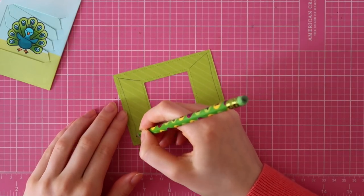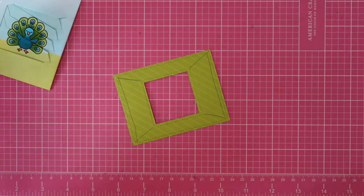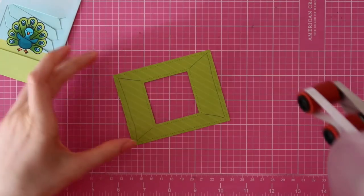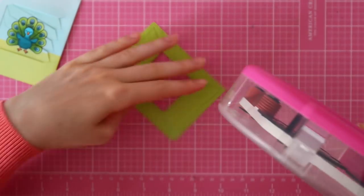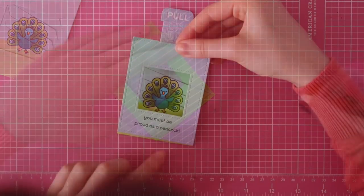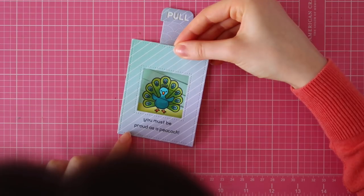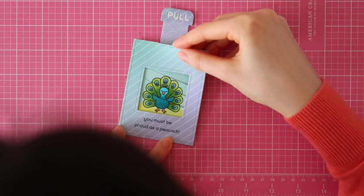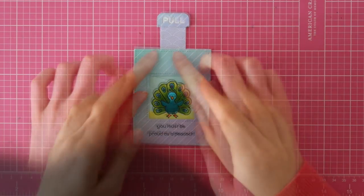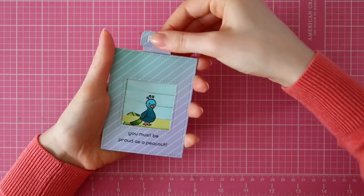I'm using a pencil to mark down where I have to add my adhesive for my magic picture changer card, and then I'm using my ATG from Scotch to add that adhesive. Then I can adhere my little frame on top of my magic picture changer, and I just love this purple and blue gradient. I think it's so pretty.